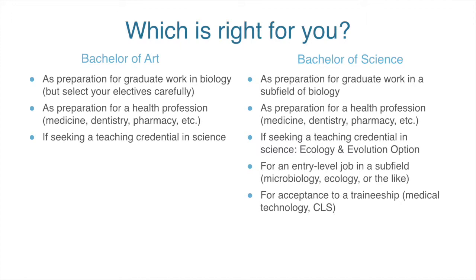The Bachelor of Arts option is also appropriate for people who want to teach high school biology, or who really don't know what they want to do yet. If you're still undecided but want to study Biology, the Bachelor of Arts might be the default option. The Bachelor of Science options are great preparation for graduate work and master's degrees, and also good preparation for the health professions. The Ecology and Evolution option is particularly useful for people who want to teach high school. The BS options are specifically built for entry-level jobs in a subfield within Biology.